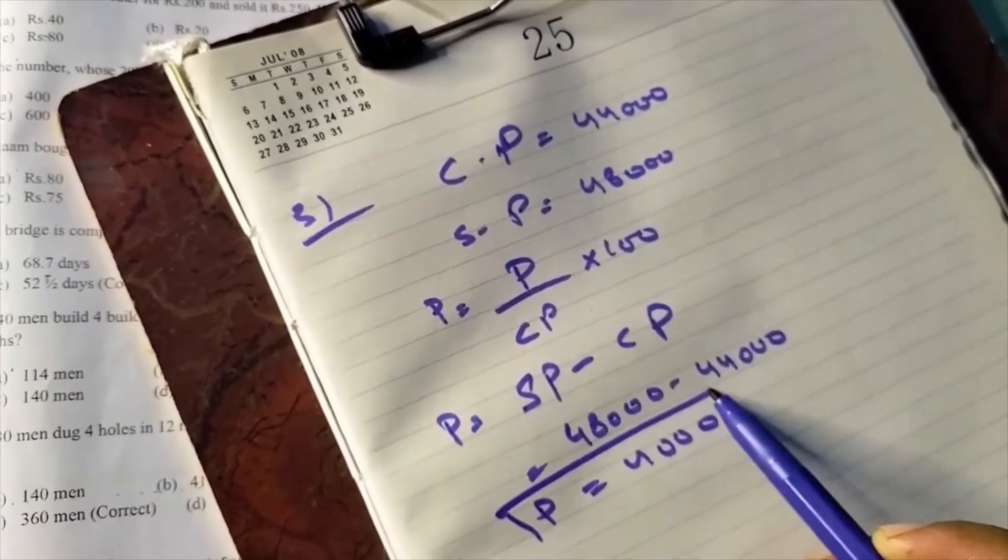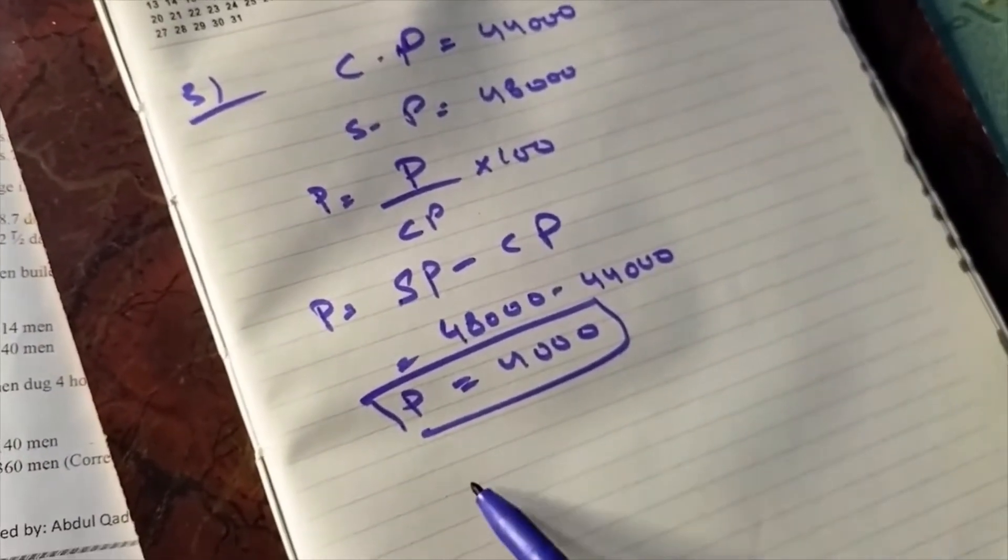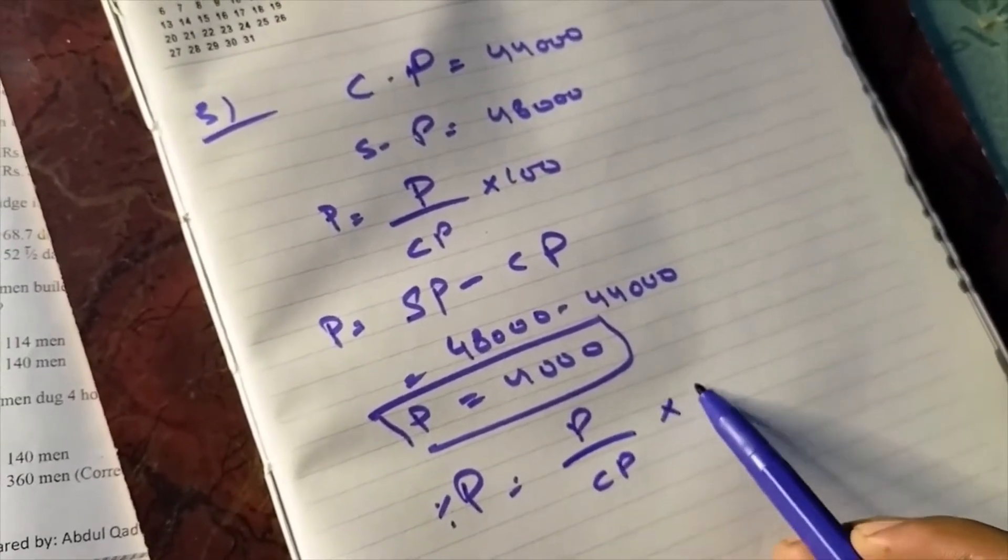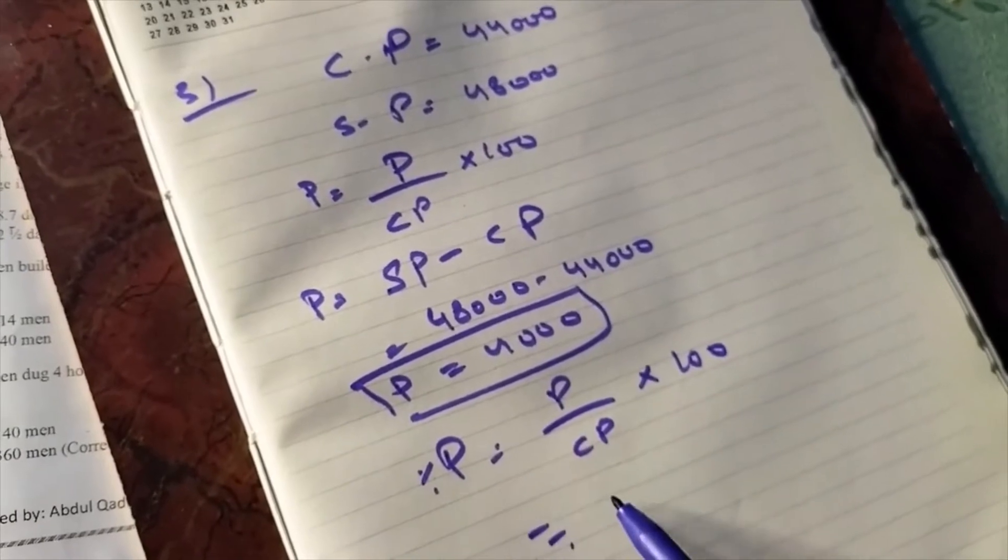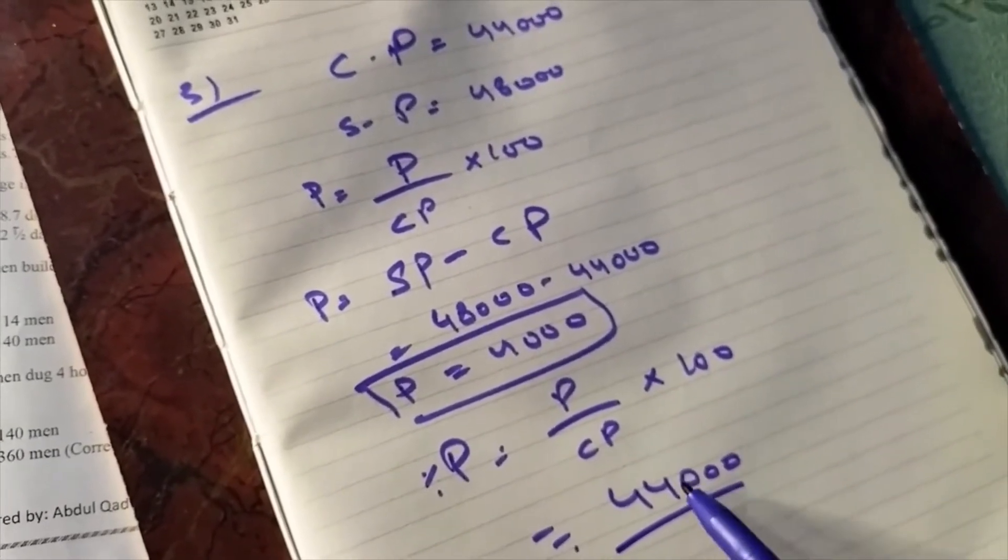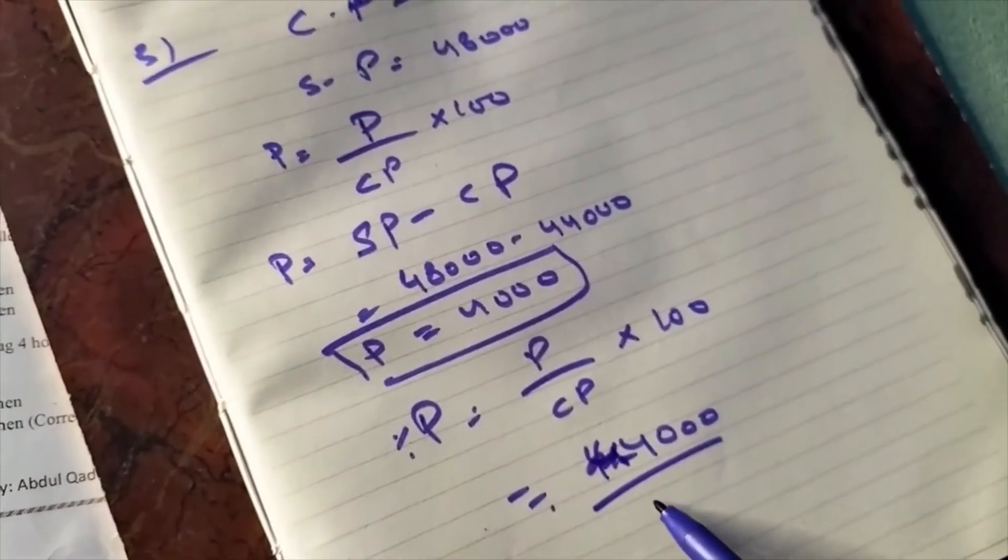Now you simply apply the formula for profit percentage: profit divided by CP multiply by 100. The profit was... sorry, not 44,000, it was Rs. 4,000. And the cost price is Rs. 44,000.